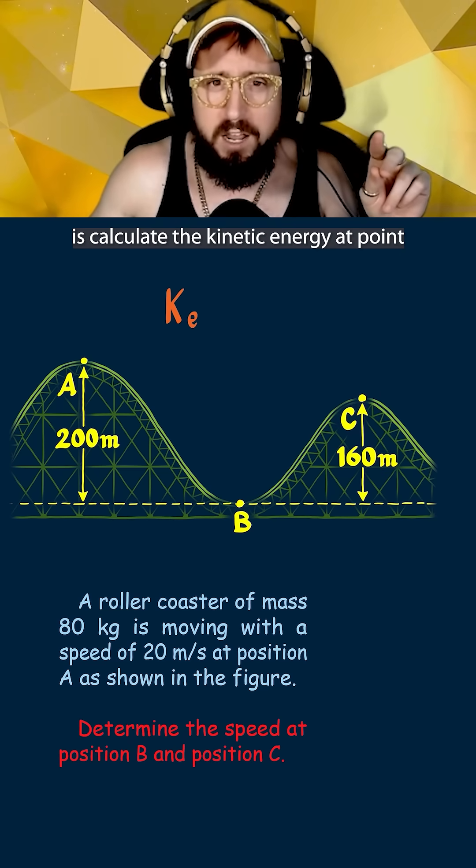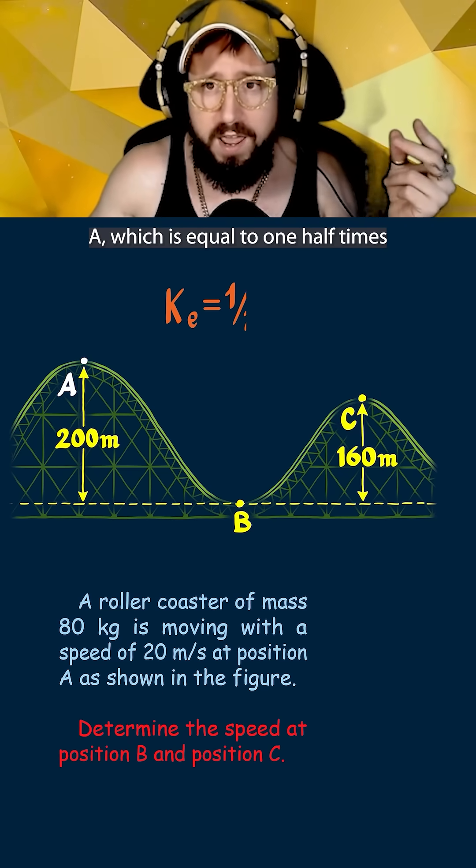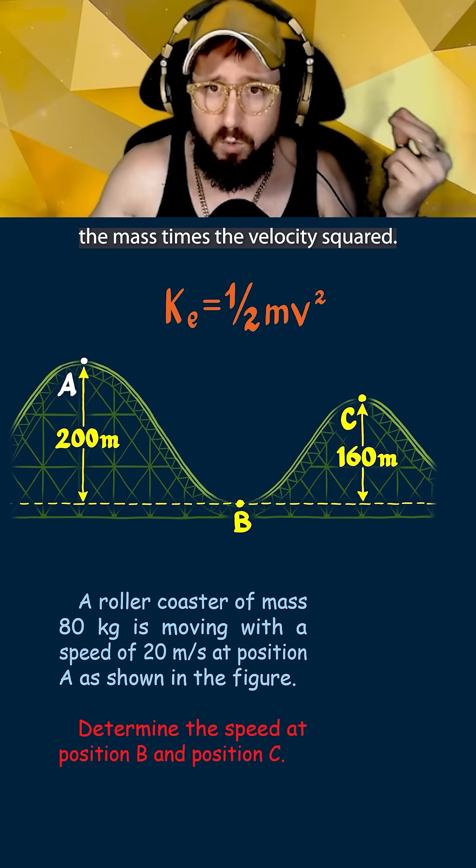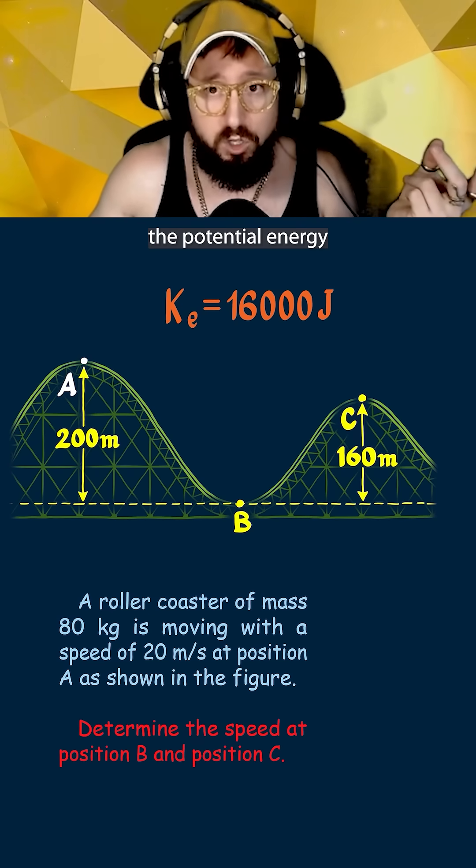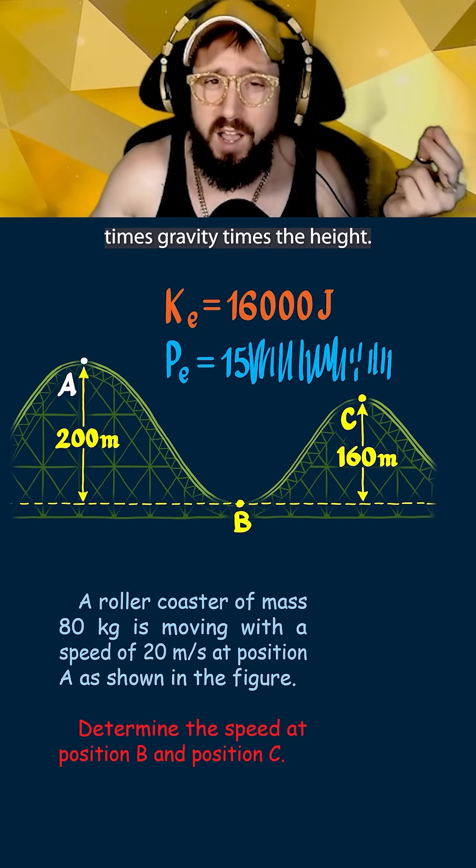The first thing we're going to do is calculate the kinetic energy at point A which is equal to one-half times the mass times the velocity squared. Next we're going to calculate the potential energy which is equal to the mass times gravity times the height.